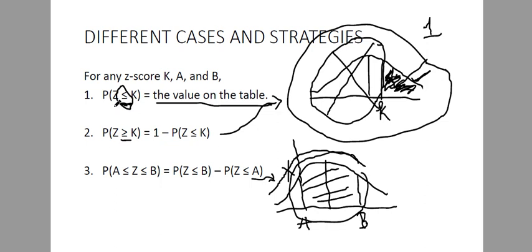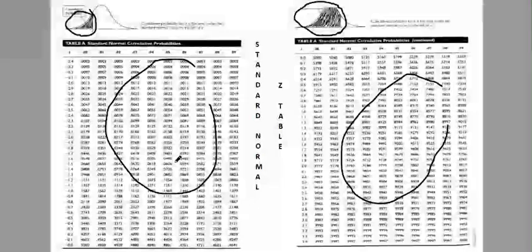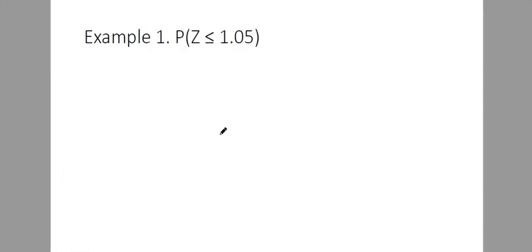So all you need to do is familiarize or memorize these three strategies, given that you're using this table. Because in Google you can see other Z-tables. For example, what is the probability of Z, or area of Z less than or equal to 1.05?